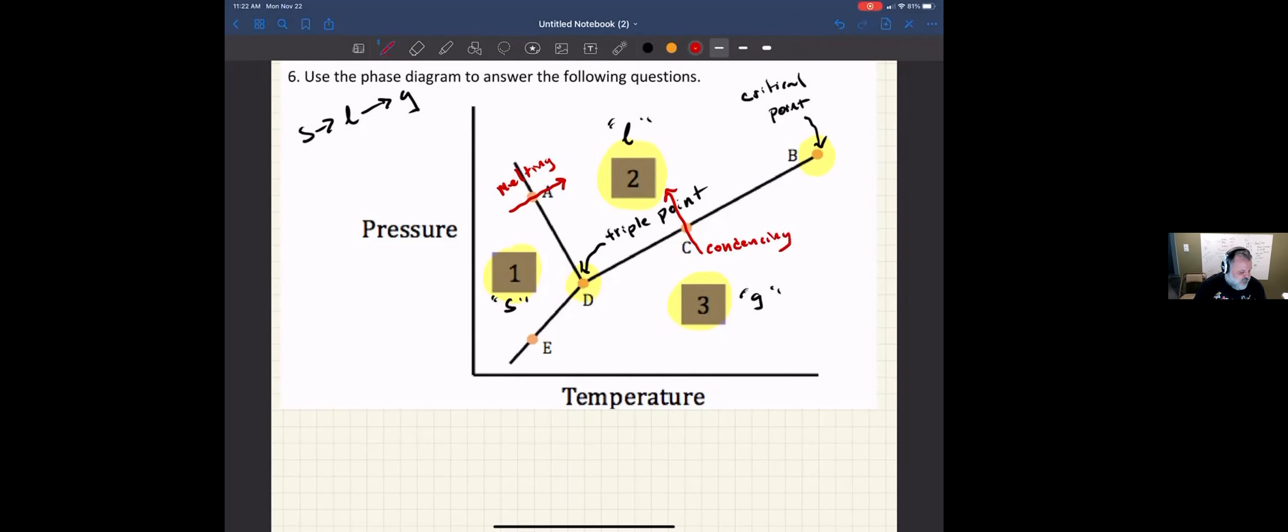Okay, so the next one is a transition from region one to region three at point E is what? I'm going from a solid directly to a gas. Notice I don't transition to a liquid. The word for this is sublimation. And the opposite of sublimation is deposition. But the answer to this particular question is sublimation.